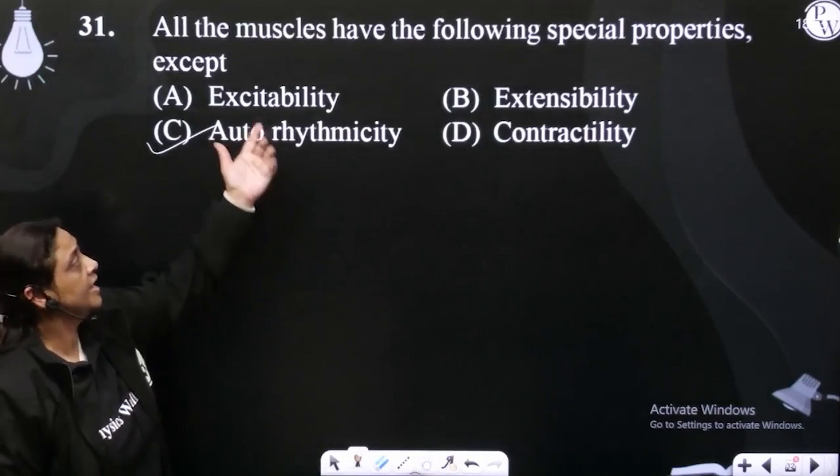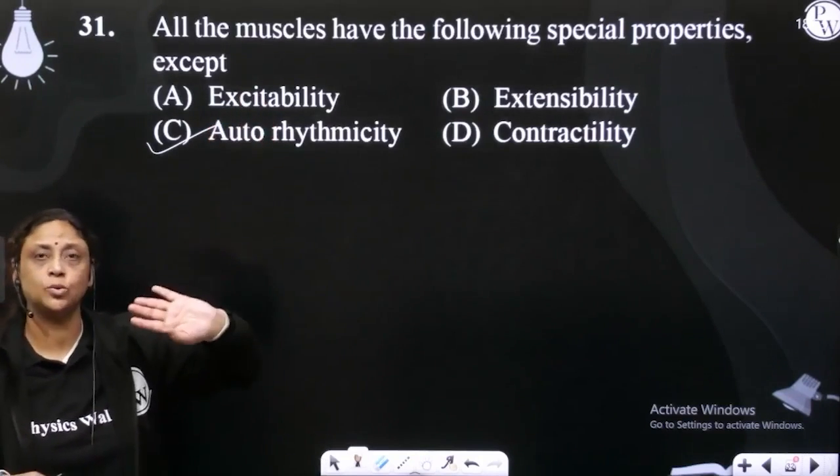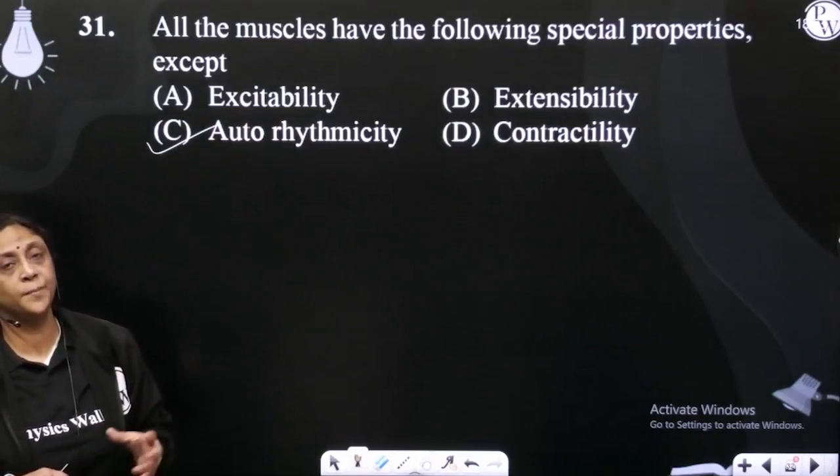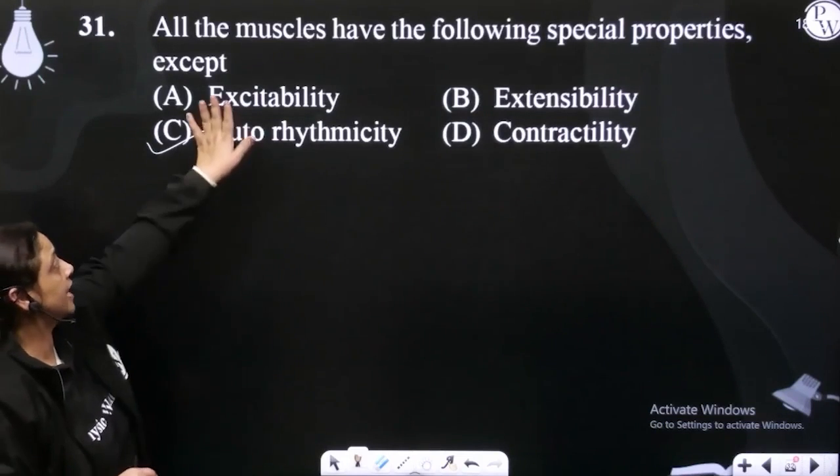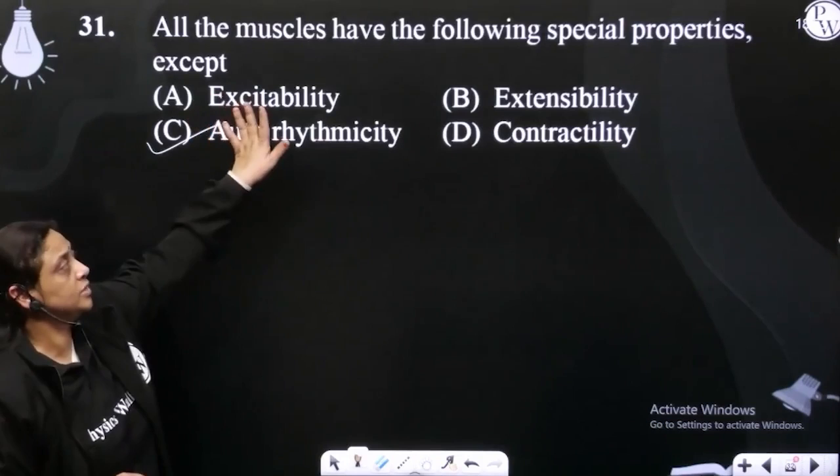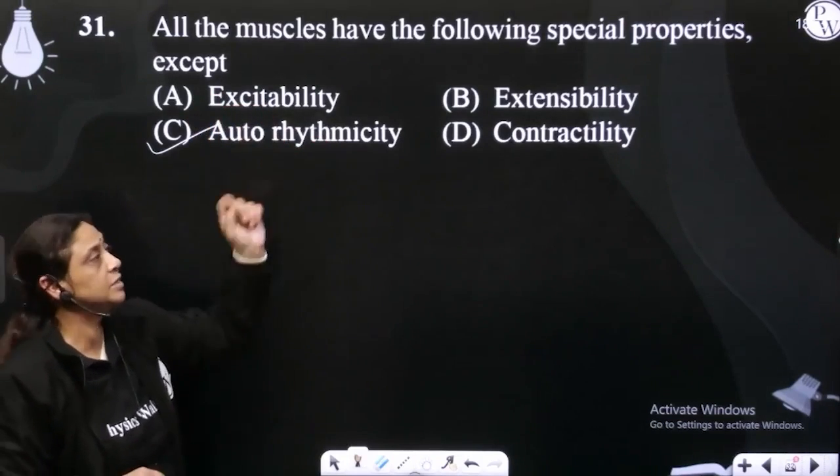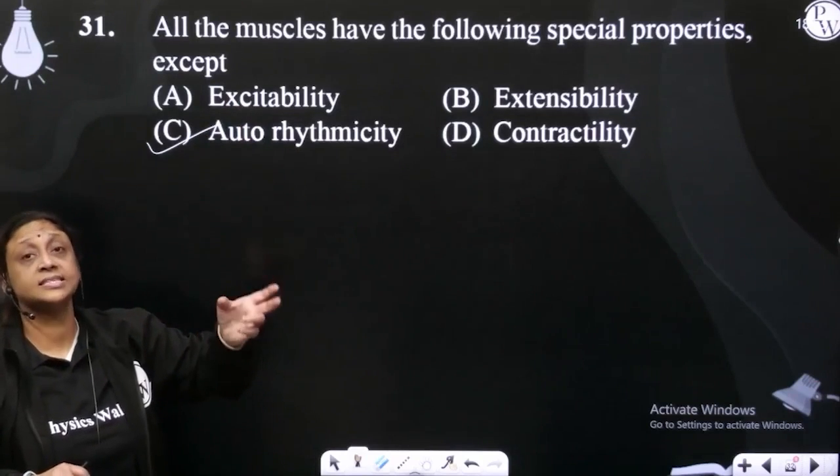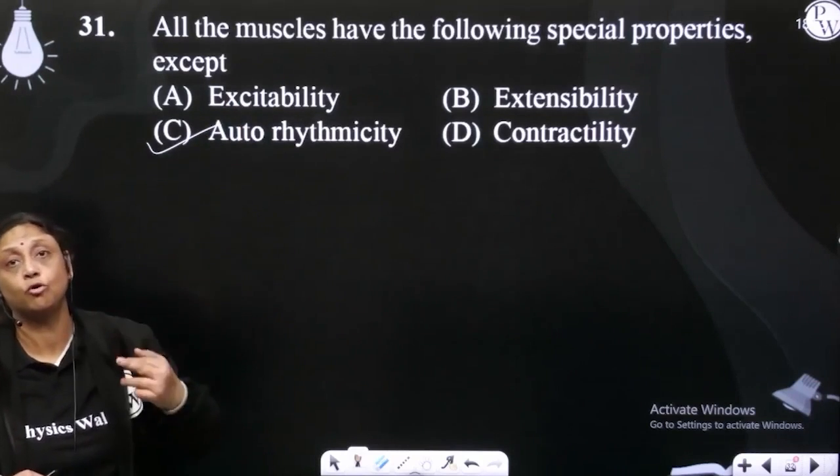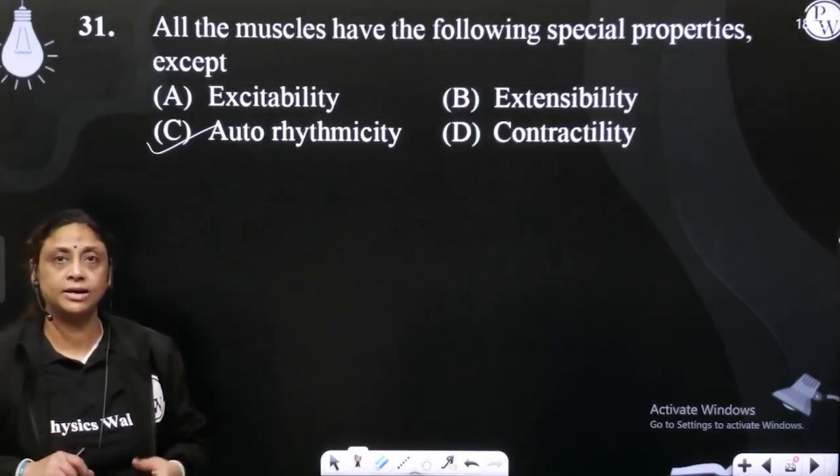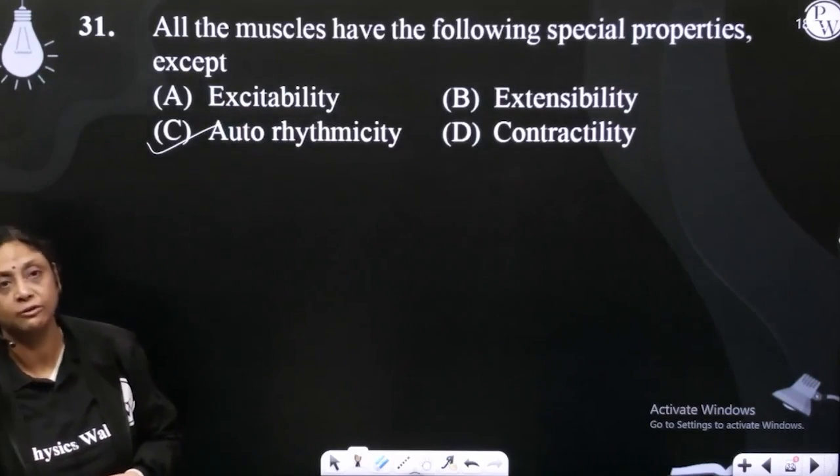These skeletal muscles don't have this. So what is the special property? Our muscles excite, extend, contract, relax, but auto rhythmicity, self-excited, self-maintained, skeletal muscles don't have this special property.